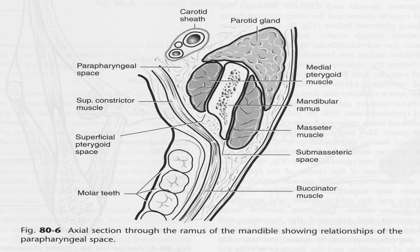Let's take a brief tour to show the diagrammatic presentation of these muscles. The first red arrow points to the masseter muscle and the second one points to the medial pterygoid muscle. These two muscles are on either side of the mandibular ramus and form what is called the pterygomandibular sling. Along with the mandibular ramus, they form the submasseteric space between the masseter muscle and the lateral wall of the ramus, and medially, between the medial pterygoid and the medial aspect of the ramus, we have the pterygomandibular space.